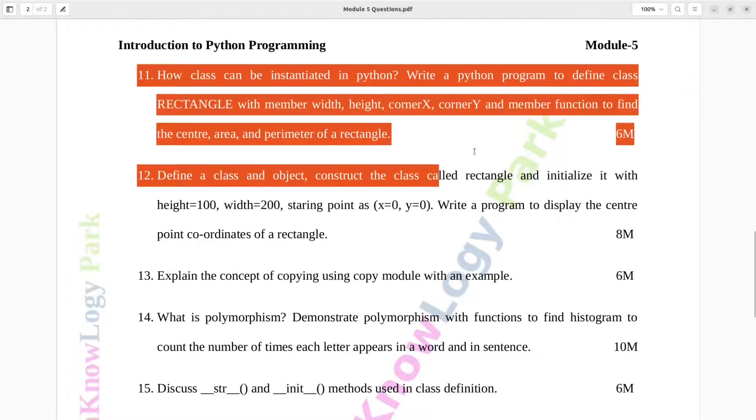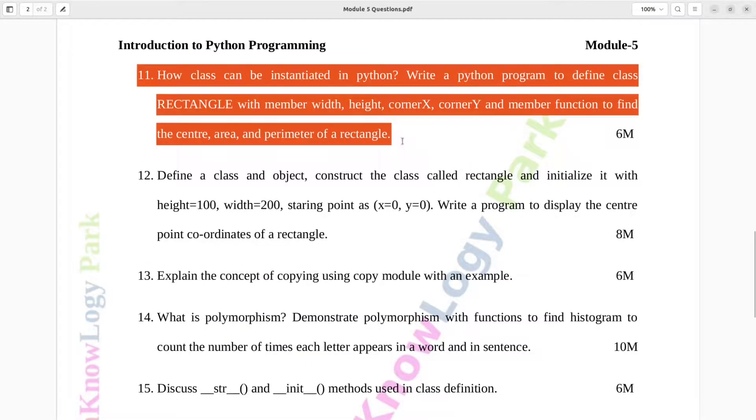Question number eleven. How class can be instantiated in Python. Write a Python program to define class rectangle with member width, height, corner x, corner y, and member function to find the center area and perimeter of a rectangle. Six marks.